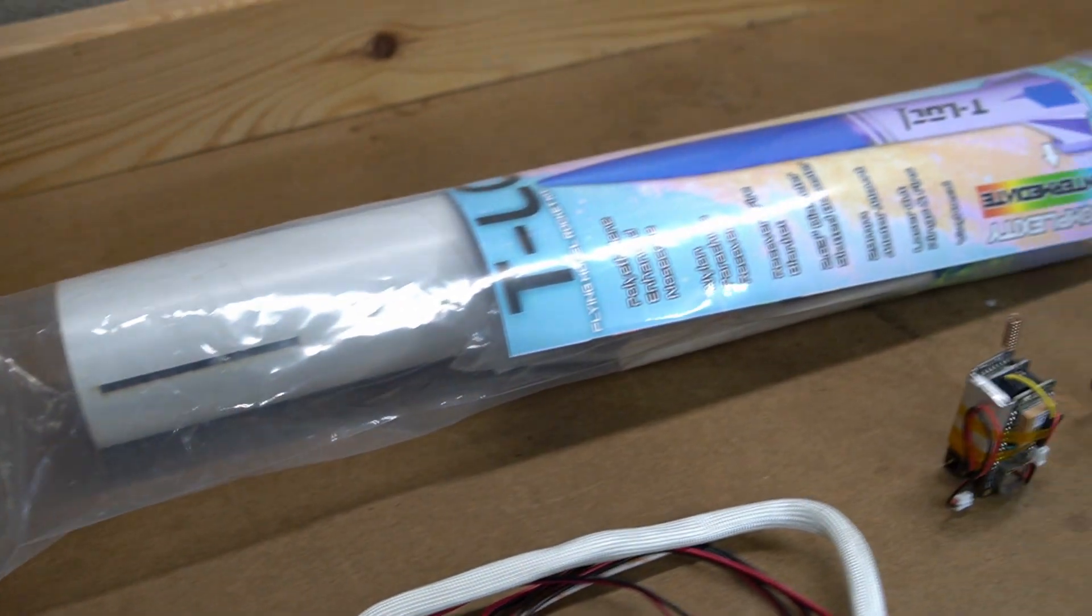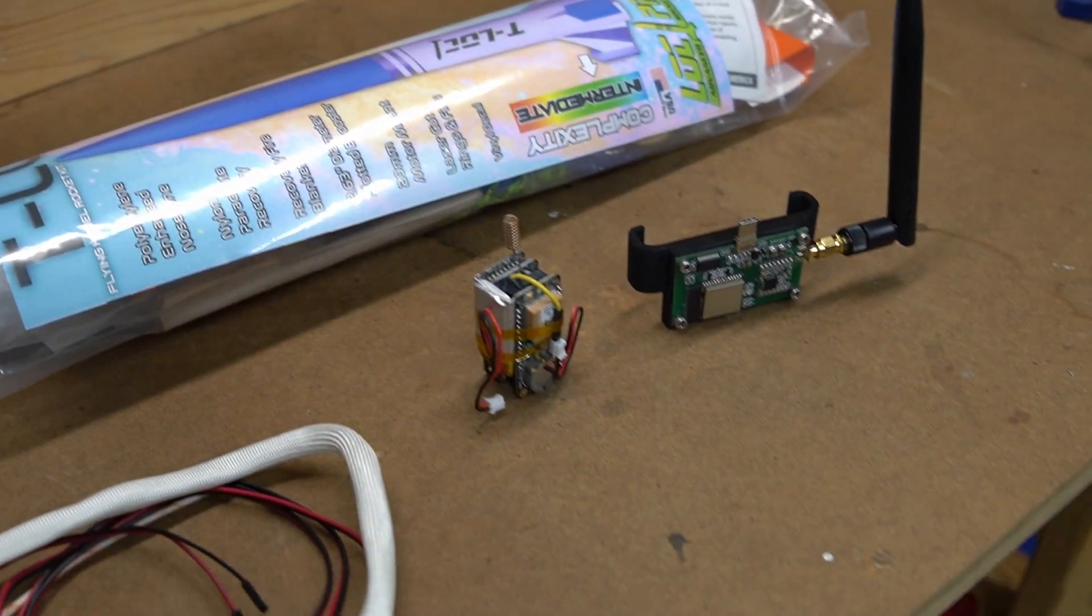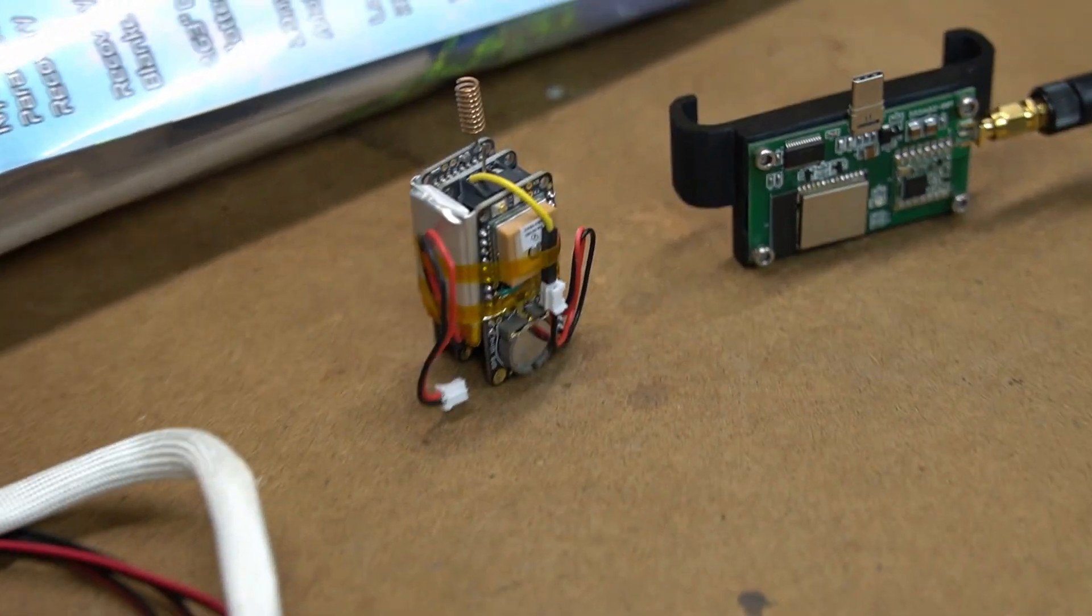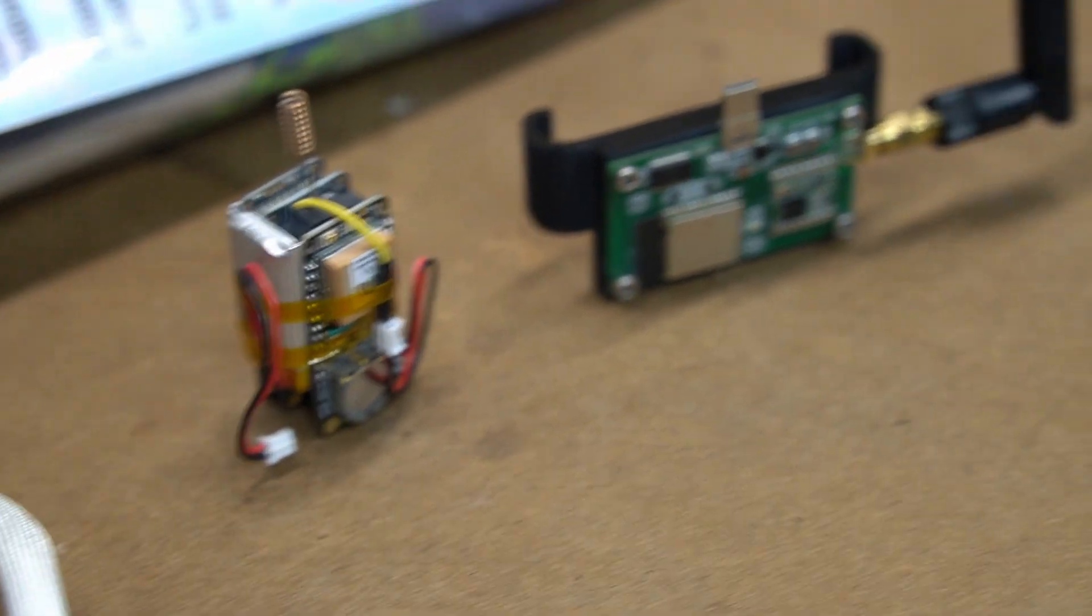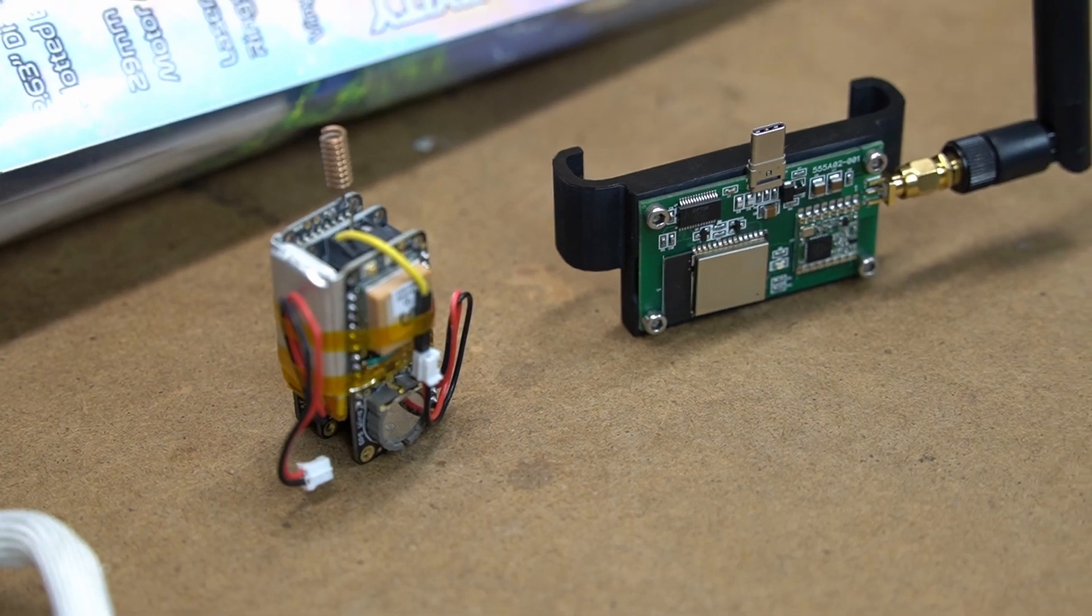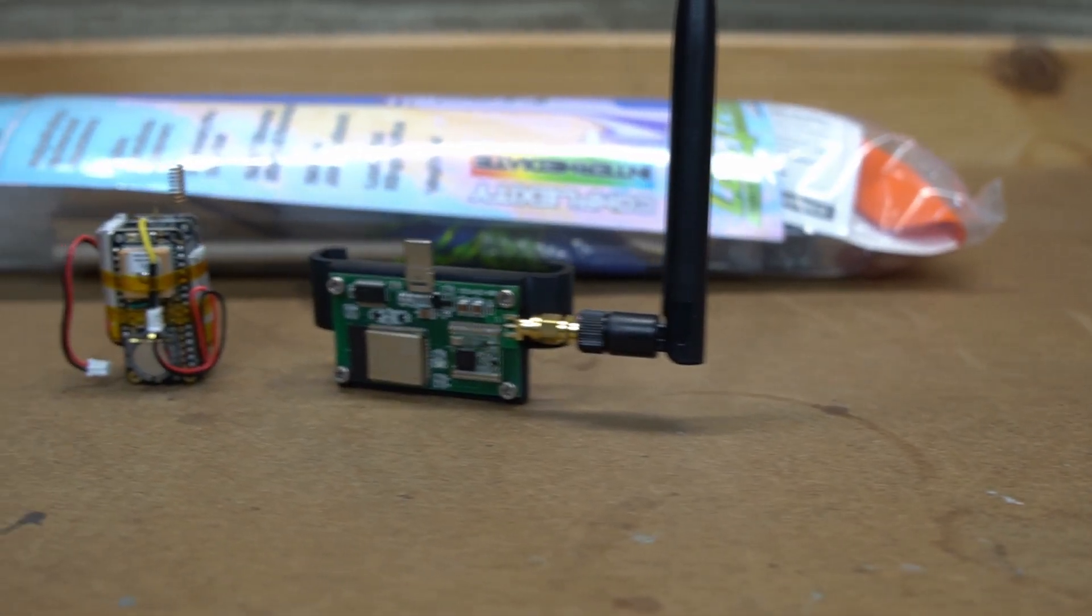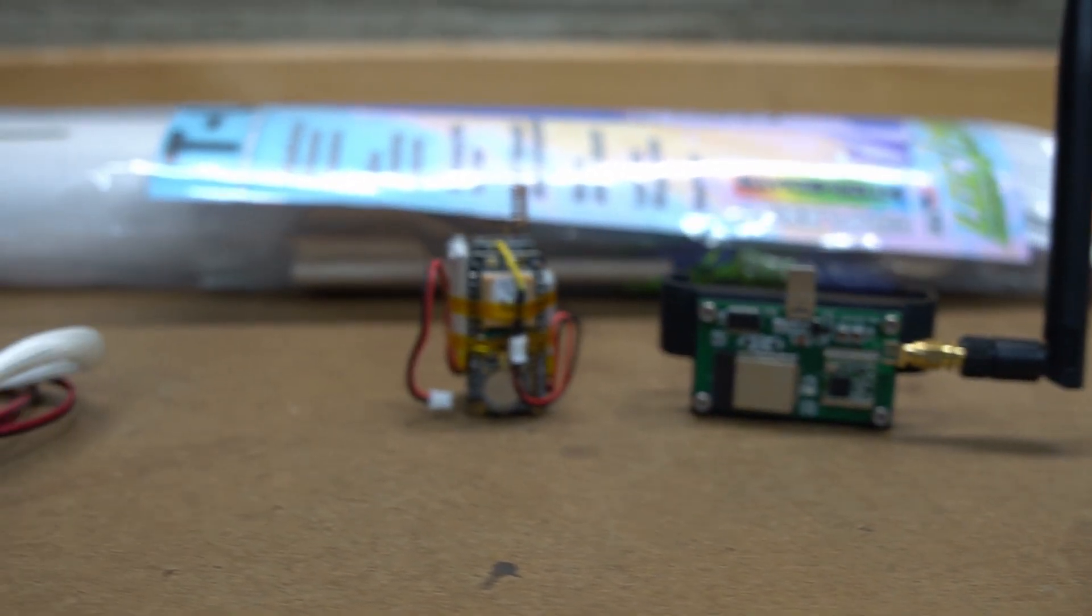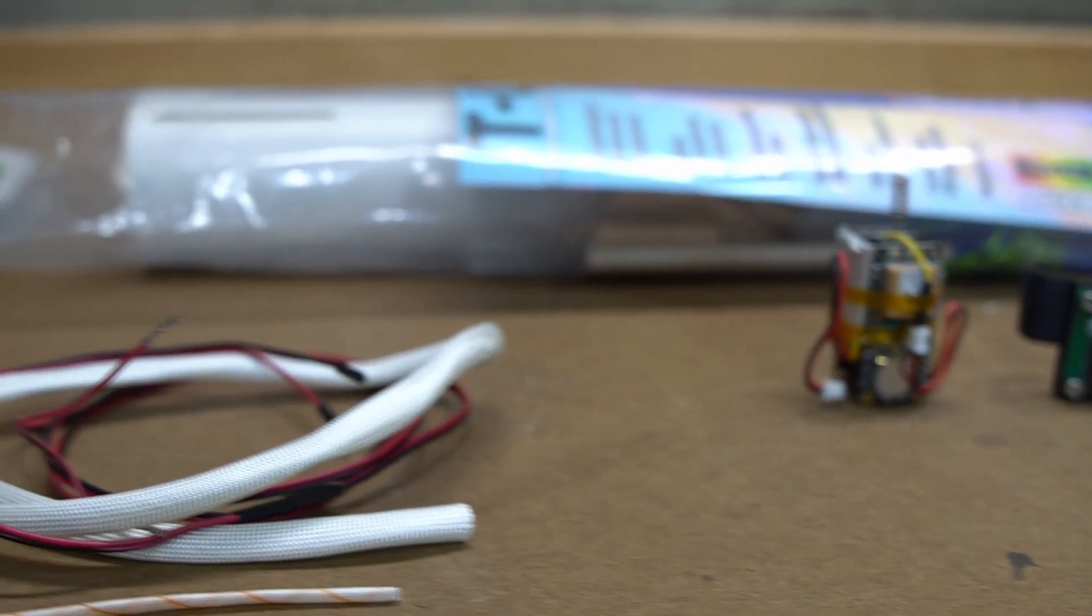Today we're going to show you how to build this model rocket from Loc Precision and add in a built-in ignition system, demonstrate how to use that with this electronics payload and the receiver unit that will work with your Android smartphone and the Mission Control app.